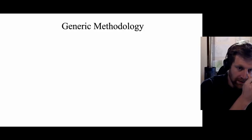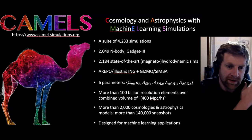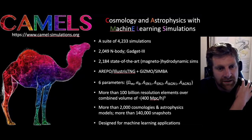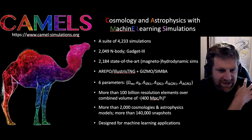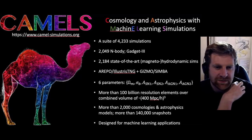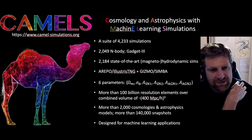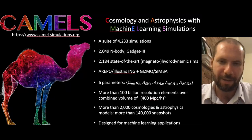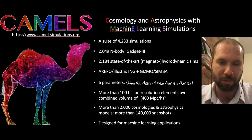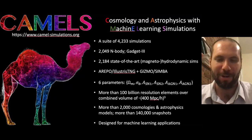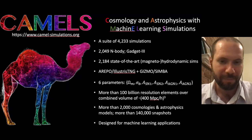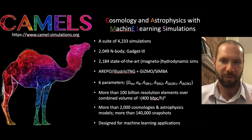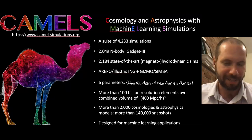It's important to emphasize that the two simulations are run with different hydrodynamic codes. In this simulation, we've added two parameters that control supernova feedback - ASN1 and ASN2 - and two parameters that control AGN feedback. One controls the energy released and the other controls, for instance, the velocity of the jets for AGN.